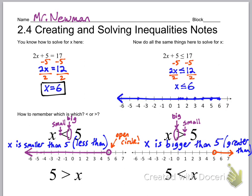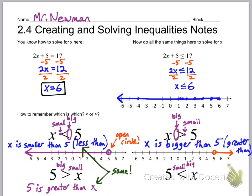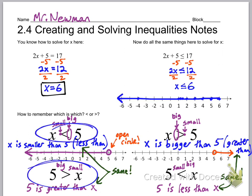To graph x greater than 5, draw an open circle on 5 and draw the line going to the right — all the numbers bigger than 5. Now look at the bottom left: the left side is big and the right side is small, so you'd say 5 is greater than x. That actually means the same thing as x is less than 5. And on the right, 5 is less than x means the same as x is greater than 5. If you flip the sides, you also flip the inequality symbol.